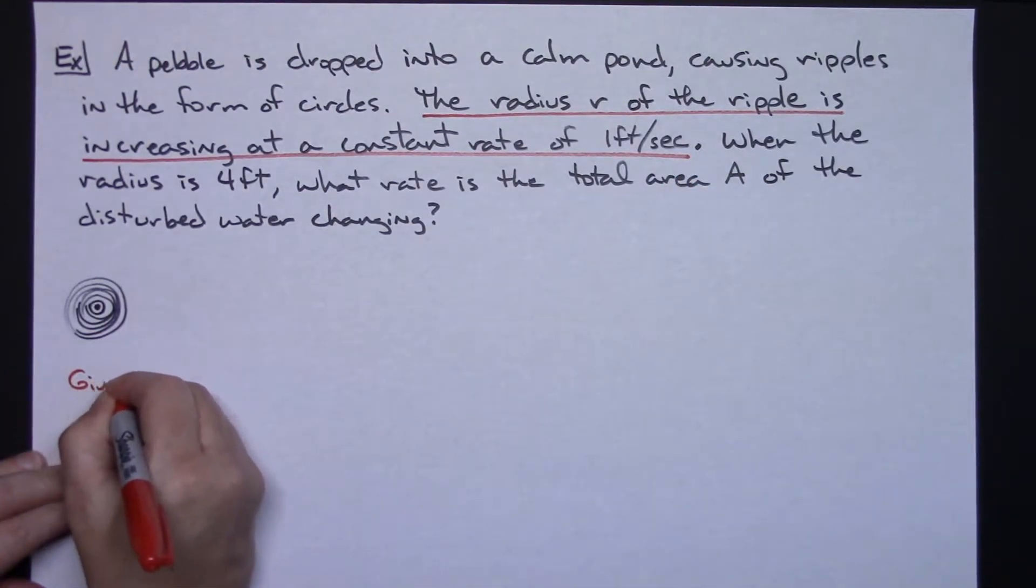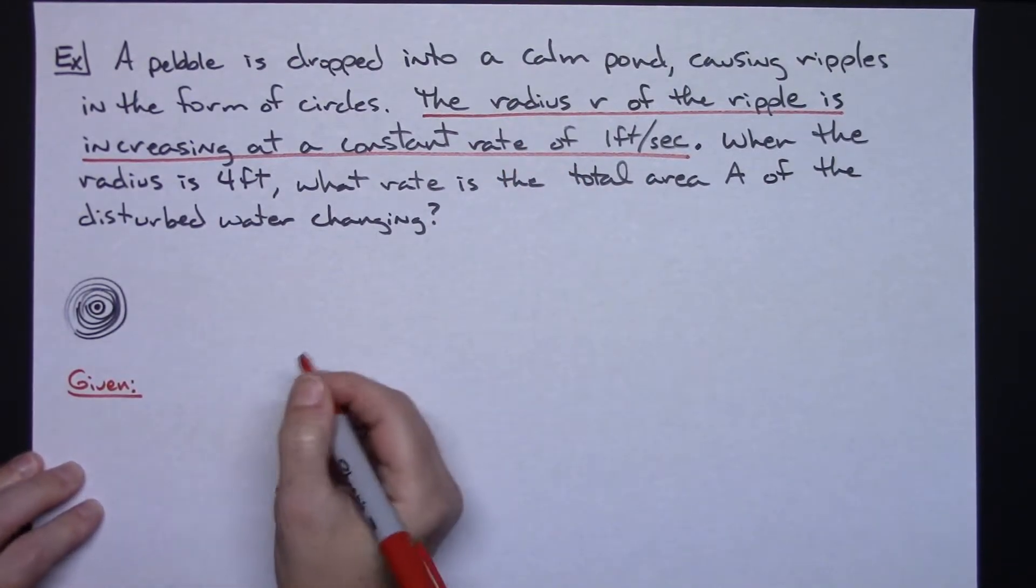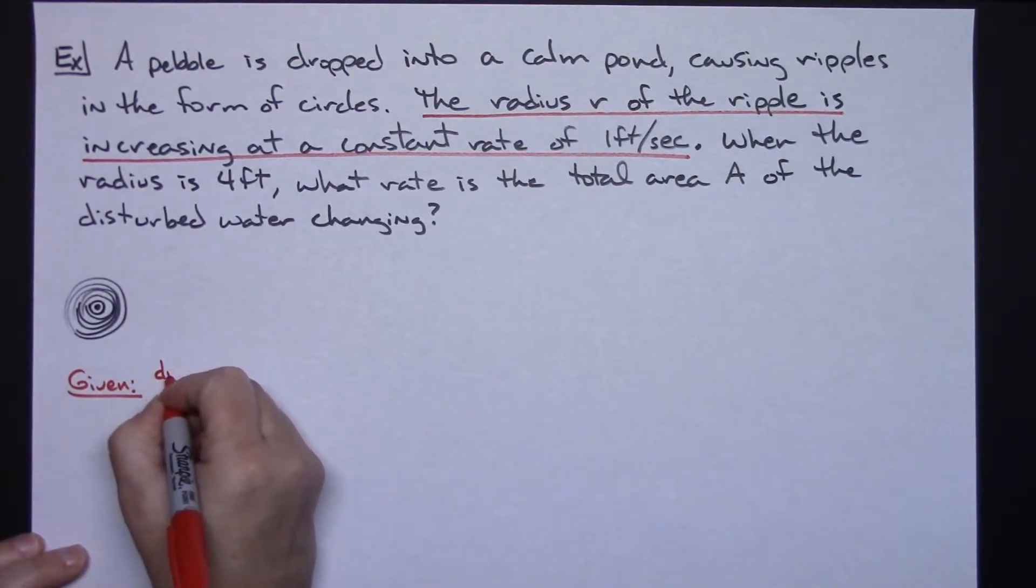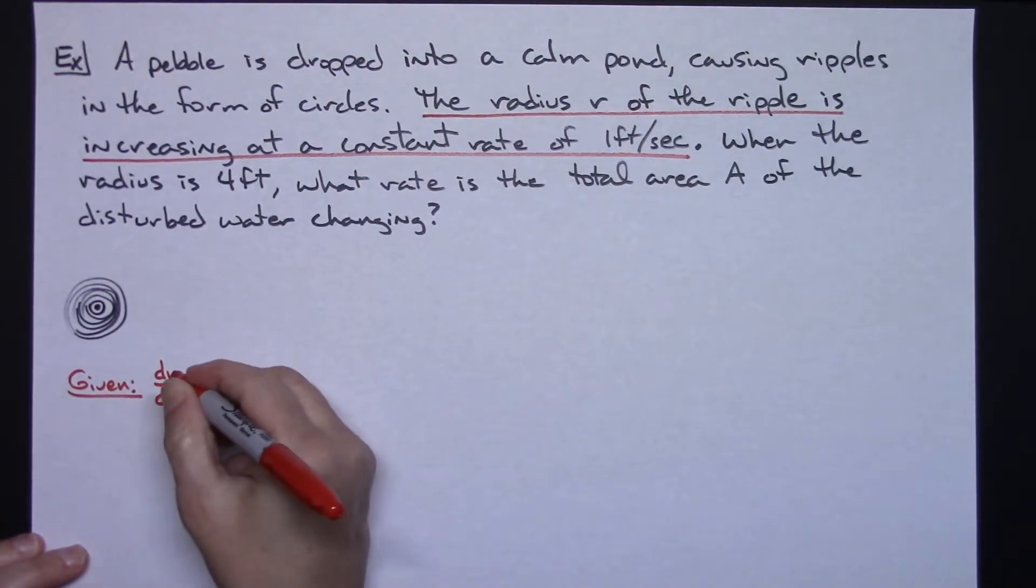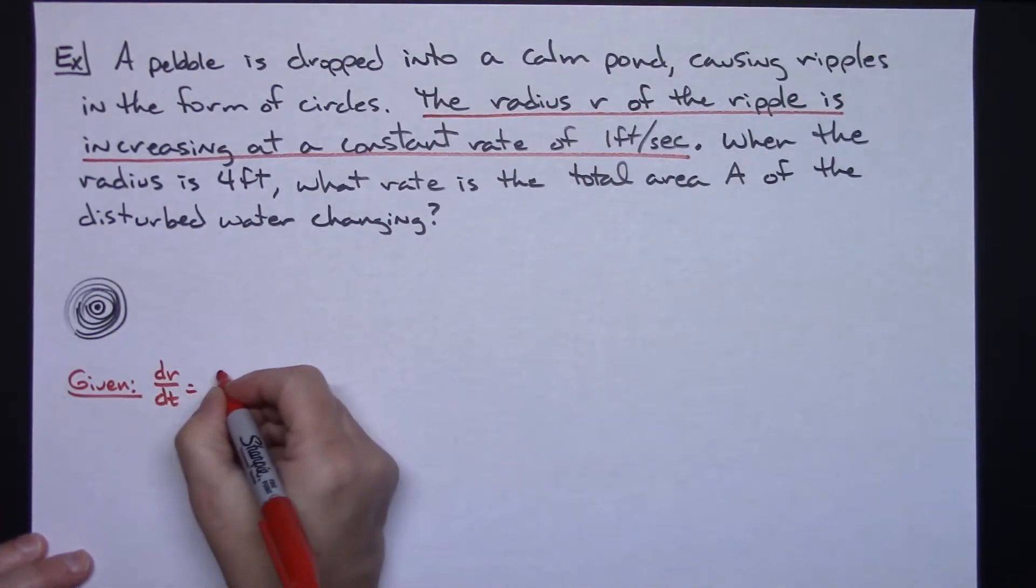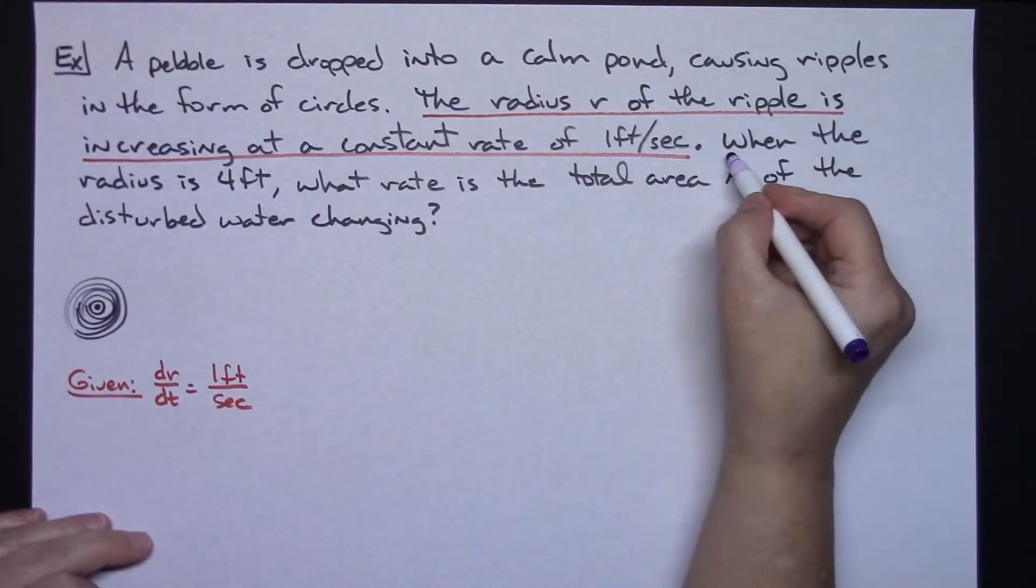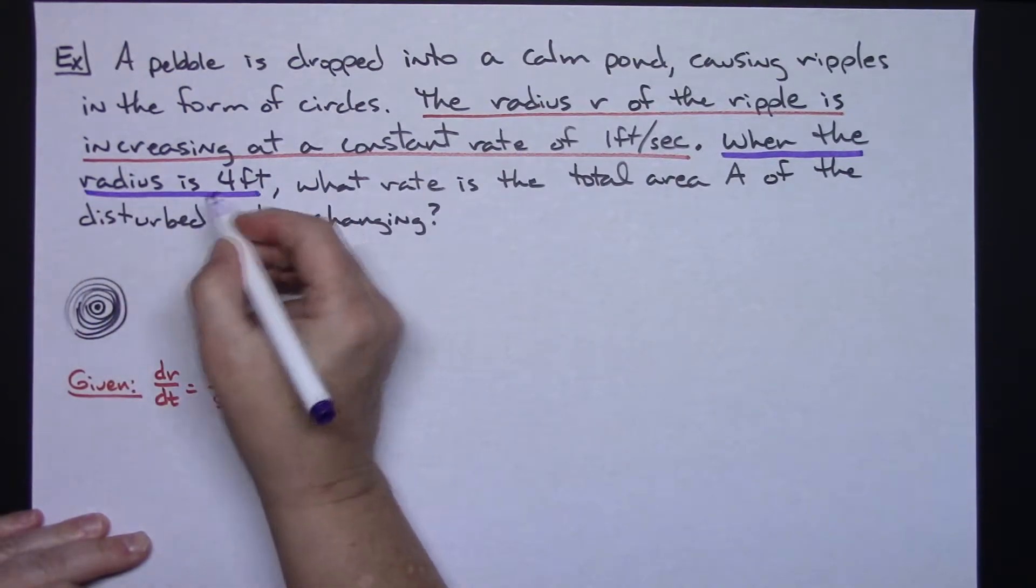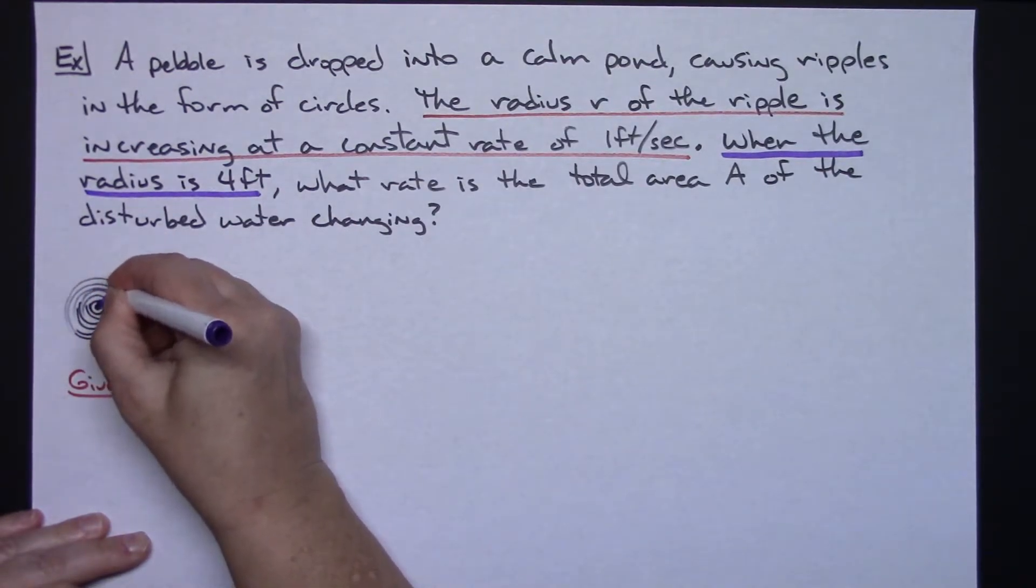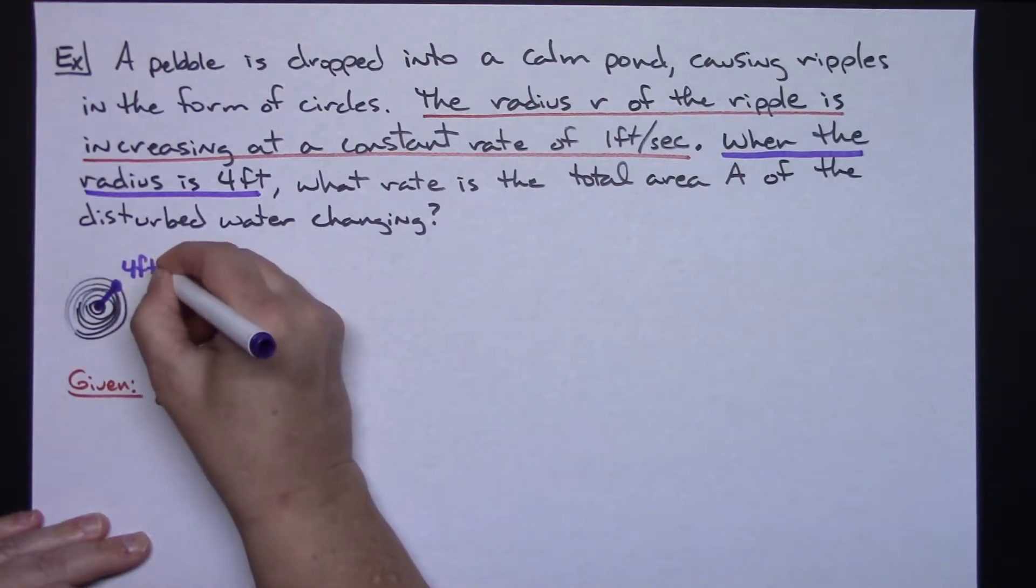Since it's a radius I'm going to use r, the dr/dt, the radius is changing with respect to time at one foot per second. When the radius is four feet, when the radius is four feet, when we get to exactly four feet, four feet equals r.